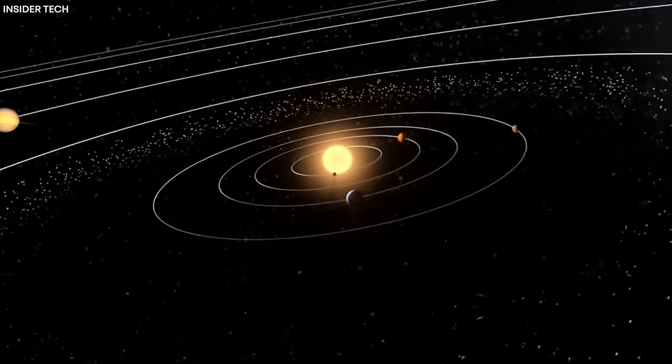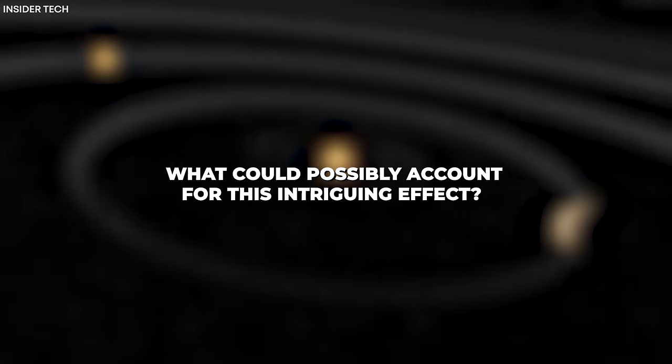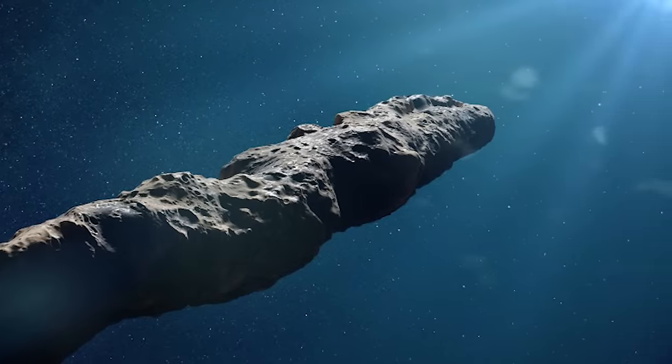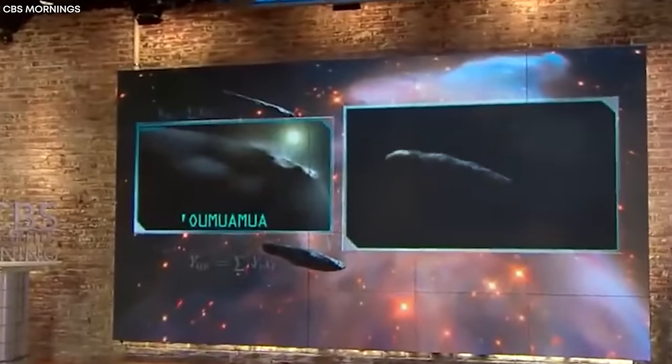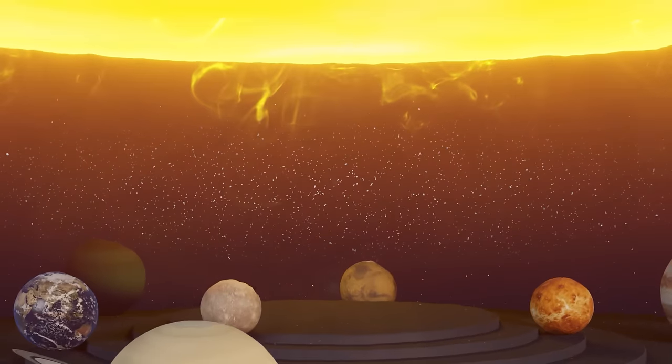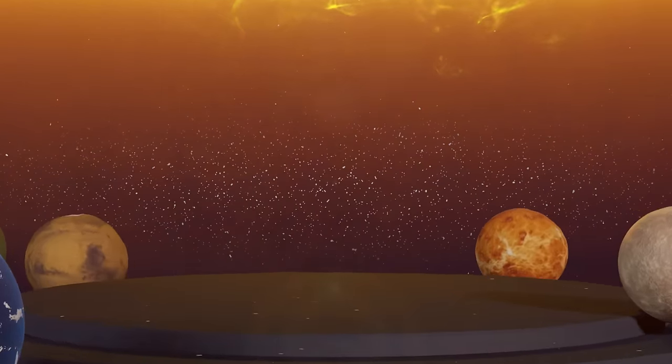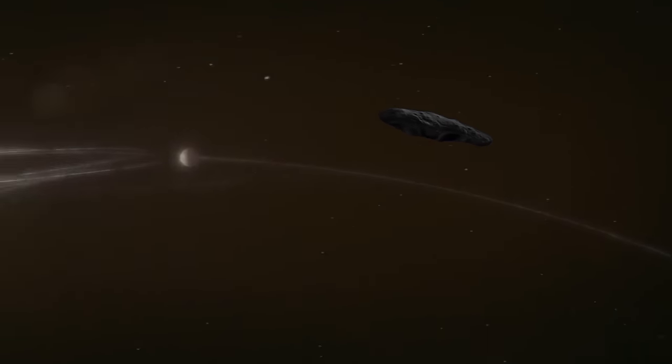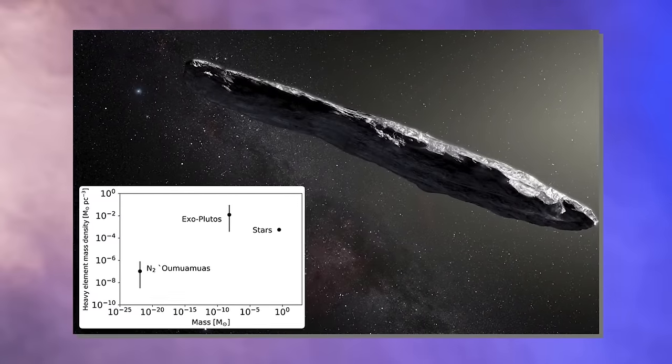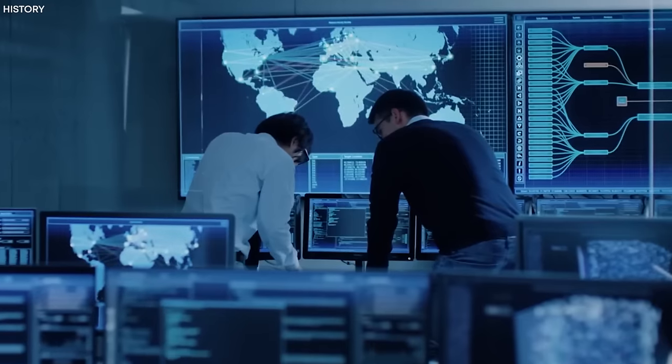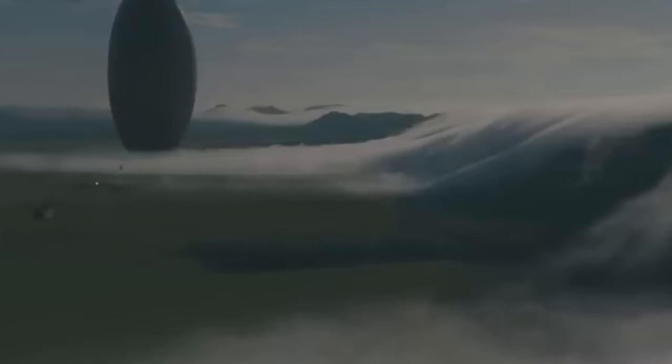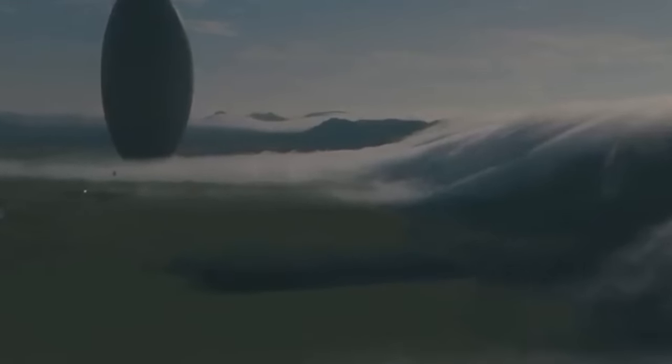However, to their astonishment, Oumuamua deviated slightly, veering off its path by a minuscule fraction while simultaneously accelerating. Such an unexpected shift in trajectory could only be attributed to an external force. But the question remains, what could possibly account for this intriguing effect? In addition to its anomalous movements, Oumuamua boasted a distinctive shape, standing out not only due to its unconventional appearance, but also due to its elongated cigar-like form. This shape is highly unusual for celestial bodies in our solar system.